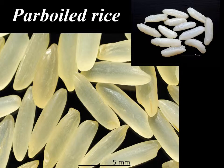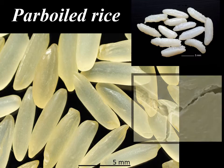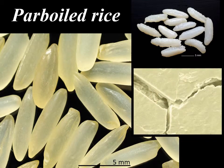Boiling gelatinizes the starch and gives the parboiled rice grain a glassy appearance. No structural details may be observed under an electron microscope.